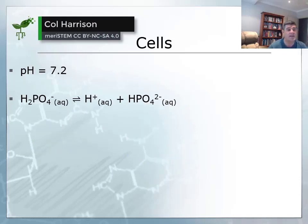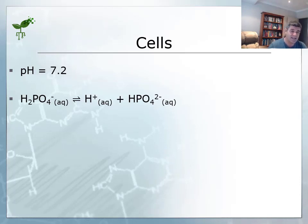Another place where we find a buffer solution to maintain a consistent pH is in cells, particularly in the cytoplasm of cells.